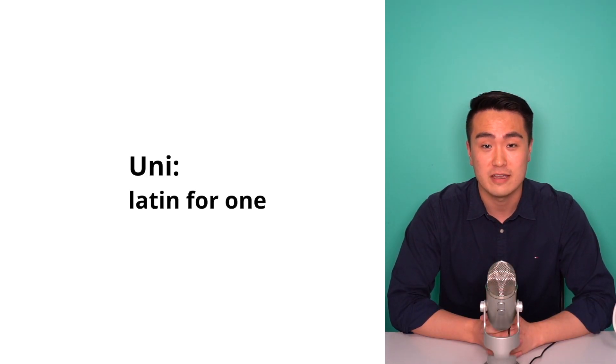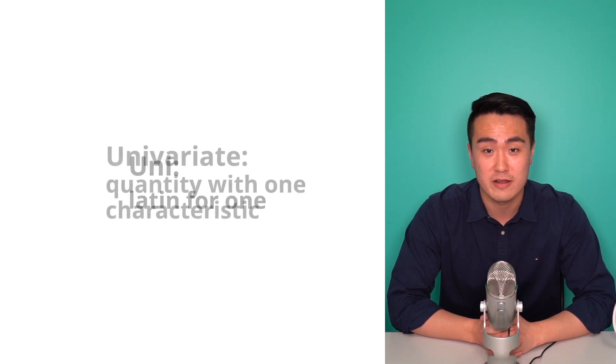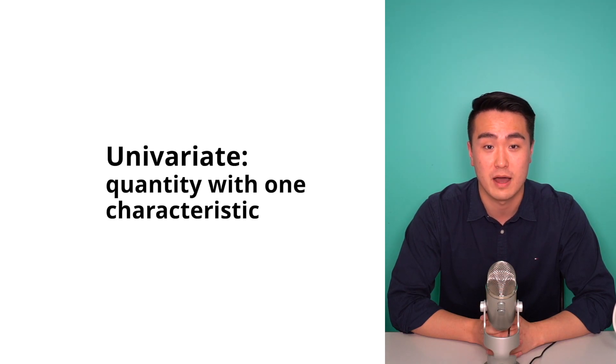Now, what does univariate data analysis even mean? Let's try to break it down. Uni is Latin for one. Variate means variable, so univariate just means a quantity that can be measured by one characteristic.